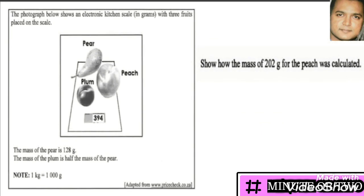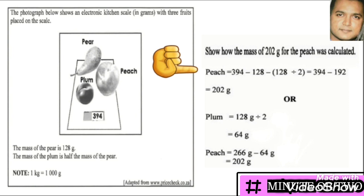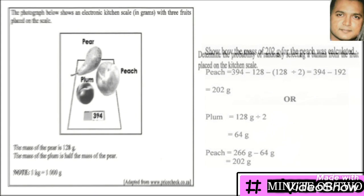Next, we look at how the mass of 202 grams for the peach was calculated. From our information: the total fruit is 394g, the pear is 128g, and the plum is half of the pear which is 64g. So the calculation for the peach is: 394 minus 128 minus 64 (which is 128 divided by 2), giving us 394 minus 192, and we arrive at 202 grams.